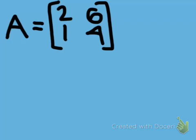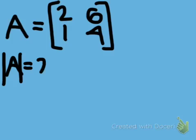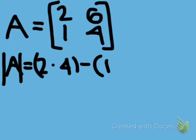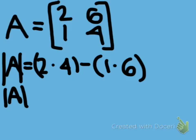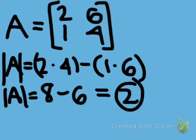For an example, we're using matrix A, which is 2, 6, 1, 4. To find the inverse of A, you first have to find the determinant of A. So the determinant of A equals 2 times 4, which is the first diagonal, minus 1 times 6. This gets us down to 8 minus 6, which equals 2. So the determinant of A equals 2.